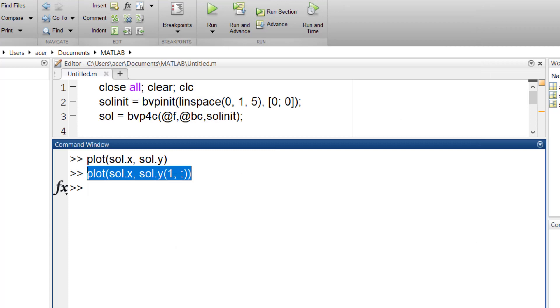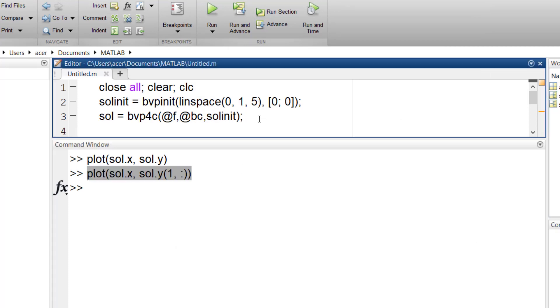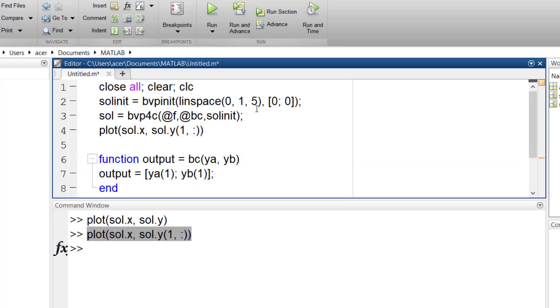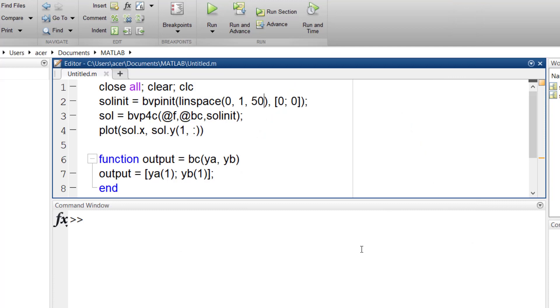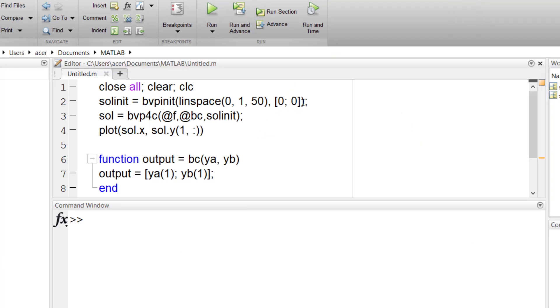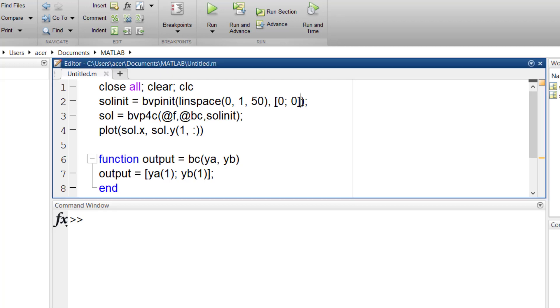I can also add more points and run again. I know that this equation has another solution too. To find the other solution, I must use a more complicated initial guess. I use the same values for x. But I define the function for corresponding y and y prime values at each node. I name the function guess.